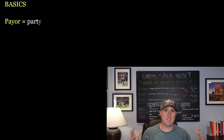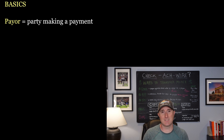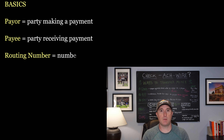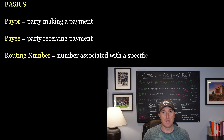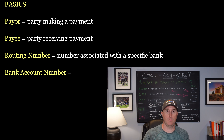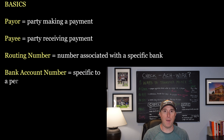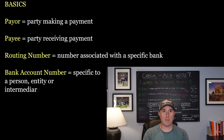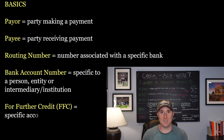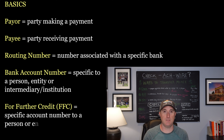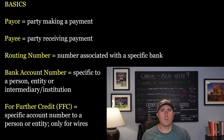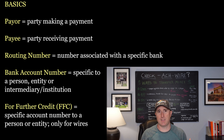Before we dive into the big three, let's just go over a couple basics. One, the payor — this is the person that is sending money. The payee — this is the person receiving money. Routing number — this is going to be a number that is associated with a specific bank. Bank account number — this is going to be your personal bank account number or an institution's bank account number. For further credit — you'll only see this with wires, but this is going to be specific to your bank account that's also associated with an institution's bank account. You'll see FFC on a lot of asset management companies or anyone that manages money.